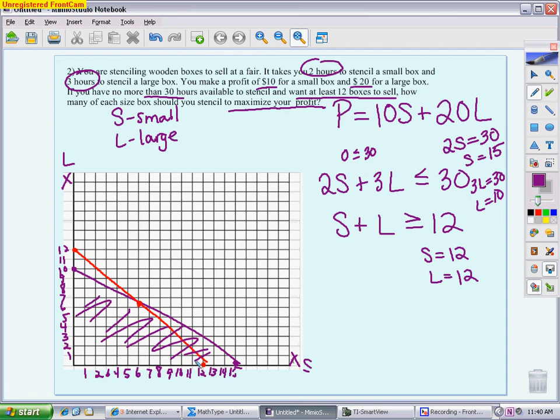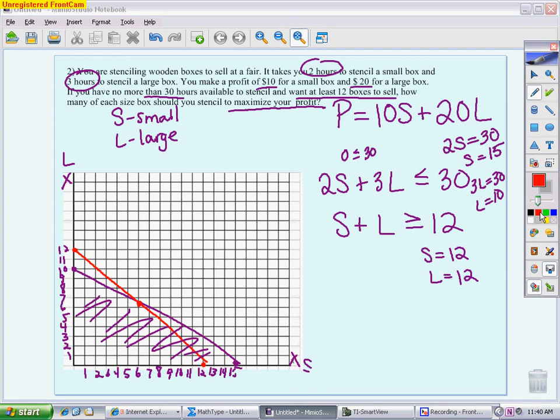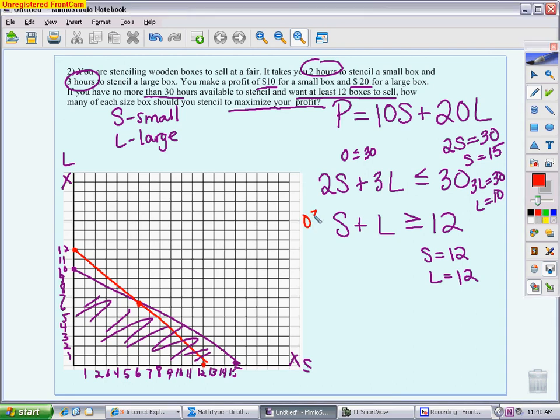Then with the red one, if I put (0,0) in, I actually get a statement that is not true. 0 is not greater than or equal to 12. So I want to shade away from (0,0) or above that. You have to look at your picture and figure out what is in common. What is the feasible region? I'm going to be beneath the purple and above the red. Beneath the purple and above the red is going to be this sliver right here. It is a triangle.